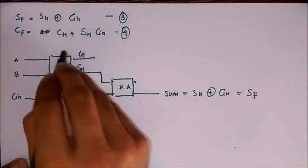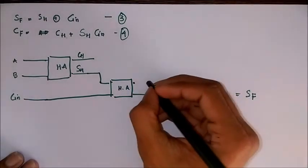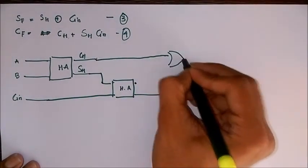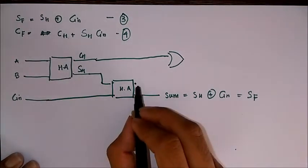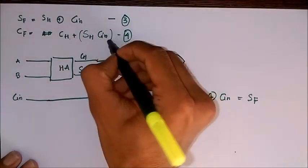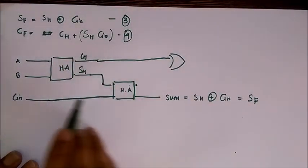Now for the carry we can see this is an OR gate, that is plus. So CH to an OR gate and plus SH into Cin, which is the carry obtained when SH and Cin are given as input to a half adder.